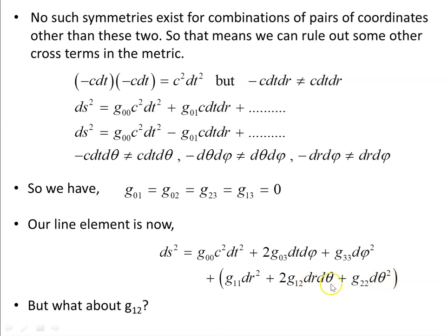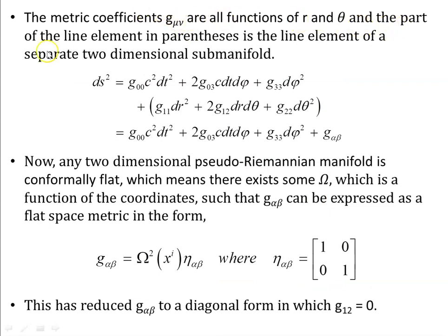We don't expect time or directional reversal for r and theta. There is also another way to rule out the g₁₂ cross term: the metric coefficients are all functions of r and theta, and the part of the line element involving r and theta — g₁₁, g₁₂, g₂₂ — forms a two-dimensional sub-manifold with interesting properties.